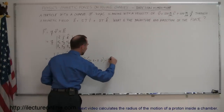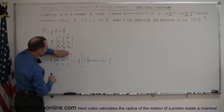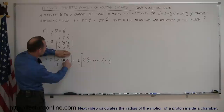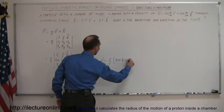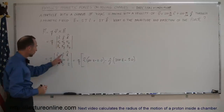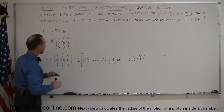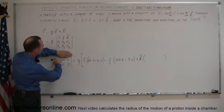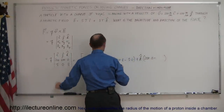The signs alternate: plus I, minus J, plus K. For the J component, hiding the row and column of J leaves four numbers: minus J times 200 times 8 minus 5 times 0. For the K component, hiding the row and column of K: 200 times 0 minus 600 times 5.